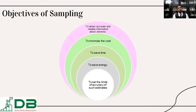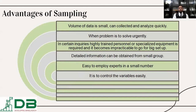To save energy, we select a sample objective. To save time and to minimize cost, we go for sampling. The advantages of sampling are: the volume of data will be shorter compared to an overall census; when a problem needs to be solved urgently, the research can be controlled very quickly. In certain queries, highly trained personnel and specialized equipment are required, making large setups impractical. A small sample makes conducting research very easy, detailed information can be obtained for a small group, and variables are easier to control.